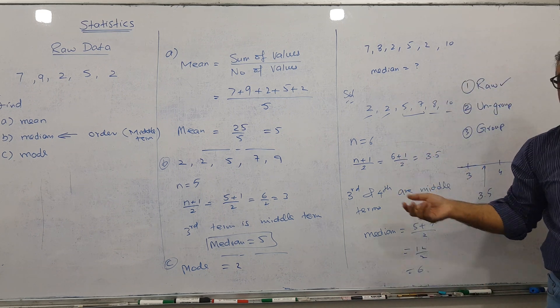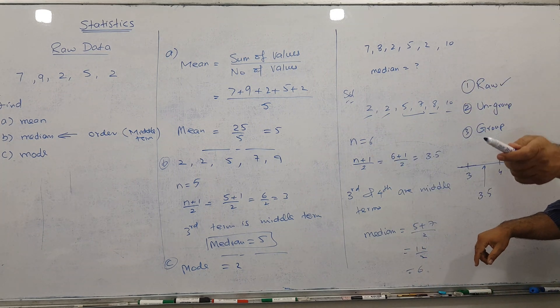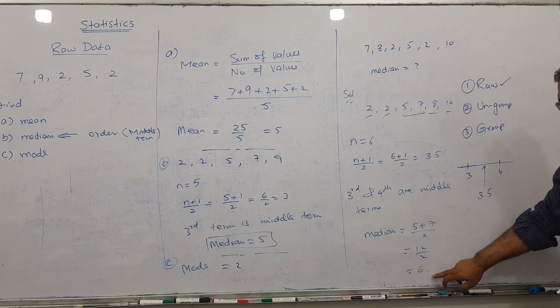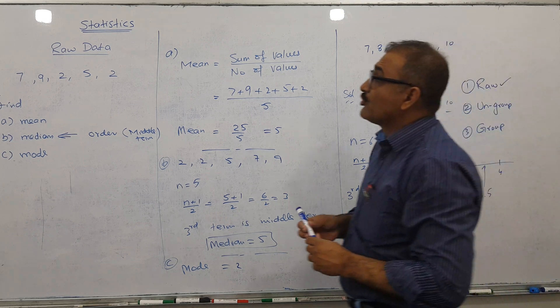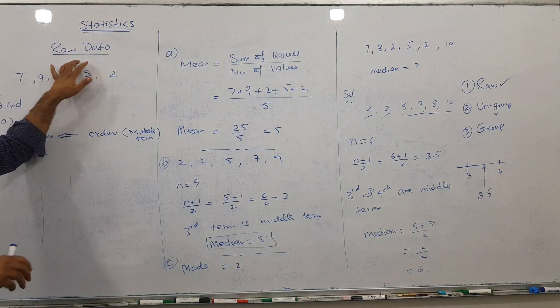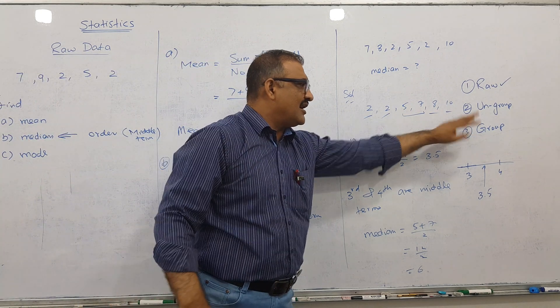It means when I find two terms, I should not leave it there. I will find the average. So it's very clear: the average of 5 and 7 is 6. This is our whole story of raw data. After this I will go for ungrouped data and then for grouped data.